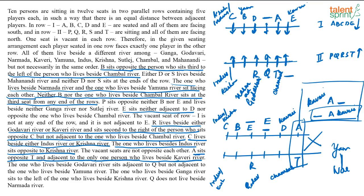The person beside Ganga River sits to the left of the one beside Krishna River. Krishna can be in row 1 or row 2. If Krishna were in row 2, the seat to its left is vacant — nobody is sitting there — so Krishna must be in row 1. Therefore C is beside Krishna River, and the person opposite C is beside Indus River. Ganga must then be D or A, both to the left of C in row 1.